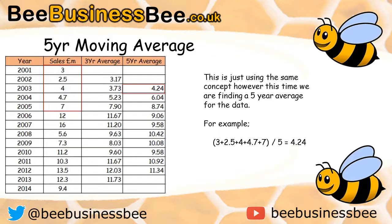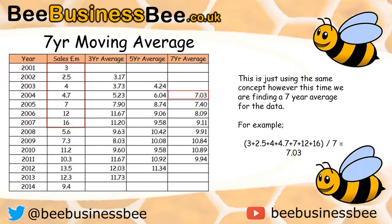You can also do a seven-year moving average — you get the idea, it just keeps going in increments. So let's do one for the sake of it. I've got my 3, 2.5, 4, 4.7, 7, 12 — add them together and divide by 7, and I get 7.03. Then for the next: 2.5 plus 4 plus 4.7 plus 7 plus 12 plus 16 plus 5.6 divided by 7, and I get 7.4. Look at how the data is slightly changing, but the difference is starting to become smoother — because I'm increasing the accuracy of the data. You can keep going: 9-year, 11-year. You can see how this pattern works with moving averages and trend data.